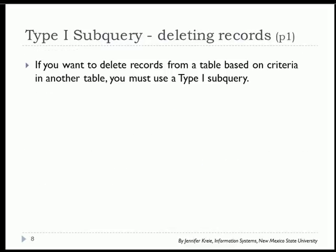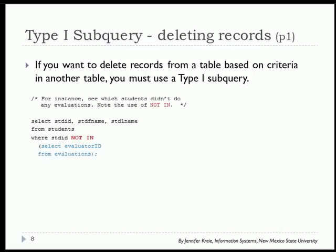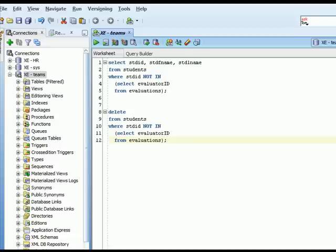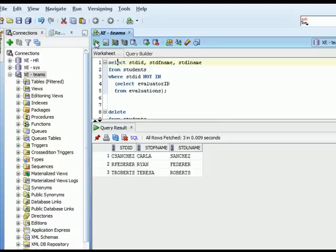An important use of the type 1 subquery is when you want to delete records from a table based on criteria in a related table — you must use a type 1 subquery. For example, let's find students who didn't do any evaluations. Notice we're switching from IN to NOT IN. So we have our select clause showing students WHERE student_ID is NOT IN the list of evaluator IDs. Let's run that in SQL Developer first to see whether any students haven't completed an evaluation.